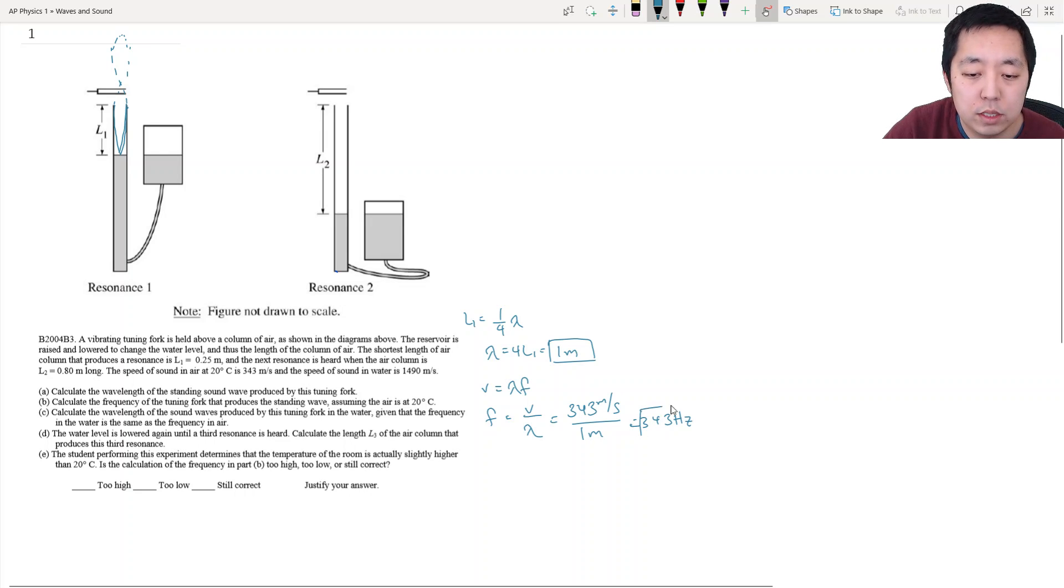It's 343, 1 over seconds, which we write as hertz. Calculate the wavelength of the sound produced in the water, given the frequency in the water is the same as the frequency in air. So because it's the same frequency, we use the same equation, but we can rearrange for wavelength. Wavelength is velocity over frequency. The frequency is the same when it enters the water, 343 hertz. But the velocity of the sound in the water is different. It's 1490 meters per second. And so the wavelength changes. 1490 divided by 343 is 4.34 meters.